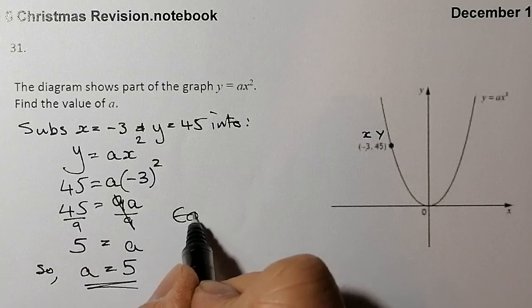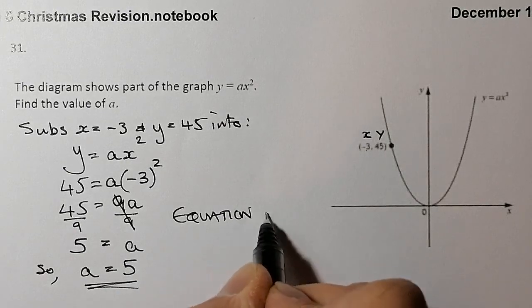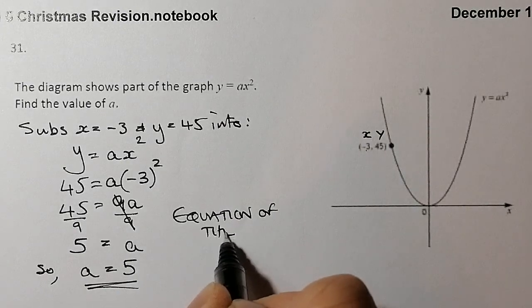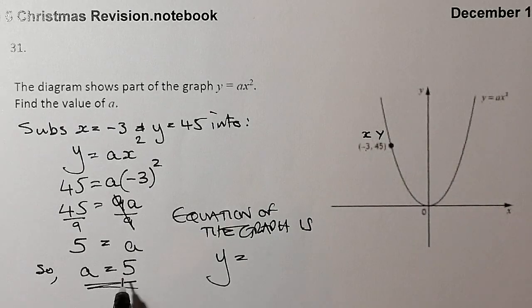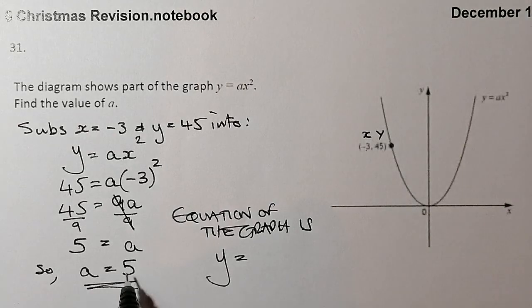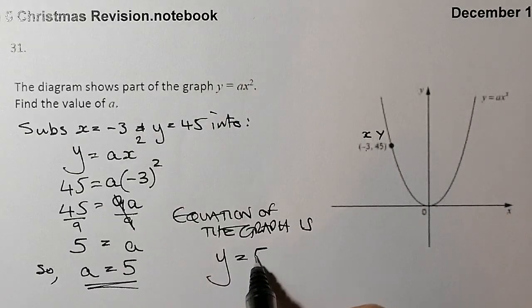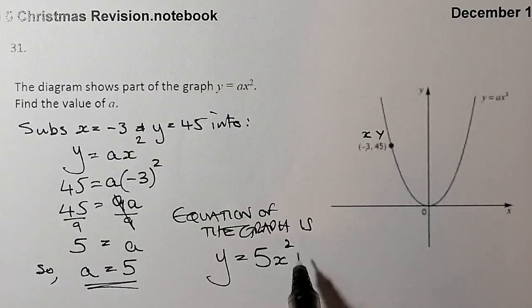So I would then know that the equation of the graph is y is equal to—so wherever a was, I'm going to put in a 5—so that's going to be 5x squared.